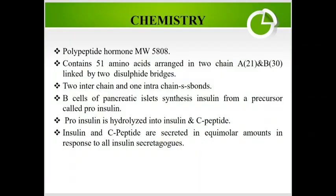Regarding the chemistry of insulin: it is a polypeptide hormone with a molecular weight of 5808. It contains 51 amino acids arranged in two chains — the A chain has 21 amino acids and the B chain has 30 amino acids — linked by two disulfide bridges. There are two interchain and one intrachain disulfide bonds. Beta cells of the pancreatic islets synthesize insulin from a precursor called pro-insulin. Pro-insulin is hydrolyzed into insulin and C-peptide, and both are secreted in equimolar amounts in response to all insulin secretagogues.